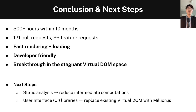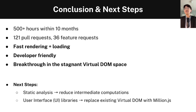If there are three major takeaways, it's that Million is very fast at rendering content and loading user interfaces; it's very developer-friendly and easy to integrate; and most importantly, it's a breakthrough in the stagnant Virtual DOM space. The Virtual DOM has been around for almost a decade with only minor performance improvements. By leveraging the compiler, we can make a quantum leap in not only Virtual DOM rendering but user interface rendering in general.